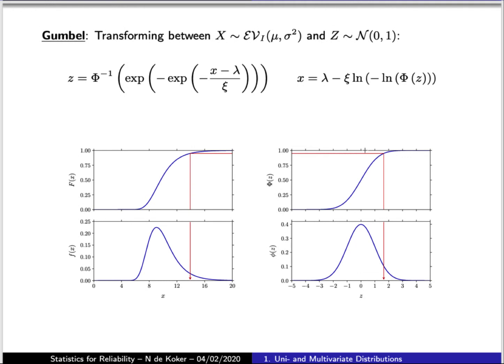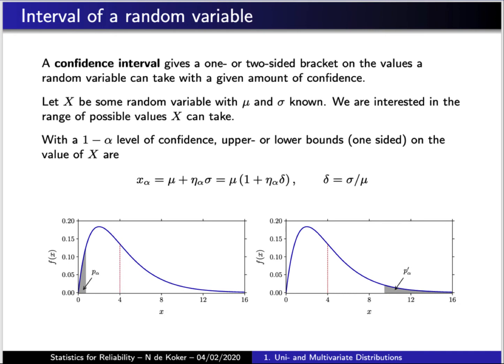Finally, in the case of the Gumbel distribution, we have a Gumbel distributed random variable with a particular associated probability value corresponding to a standard normal variable with the same probability value. In this case, the transformation is not available analytically and one has to resort to the inverse transform equations.